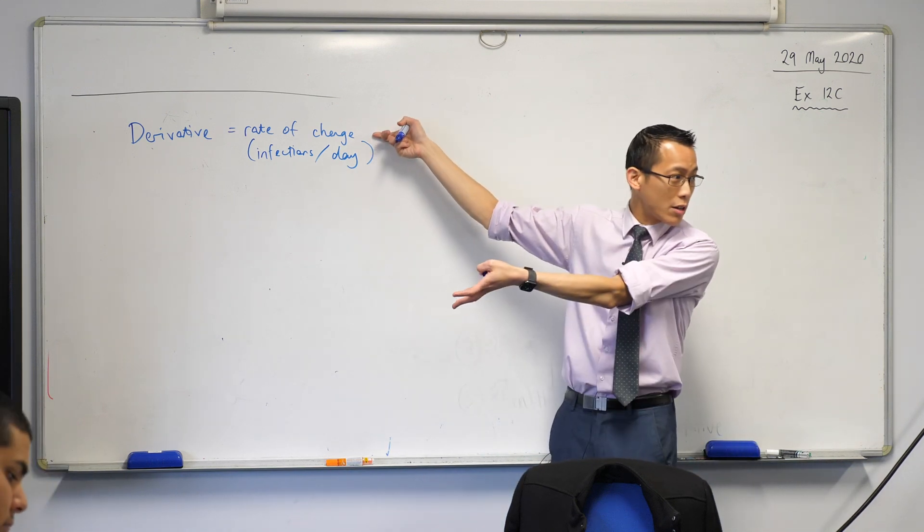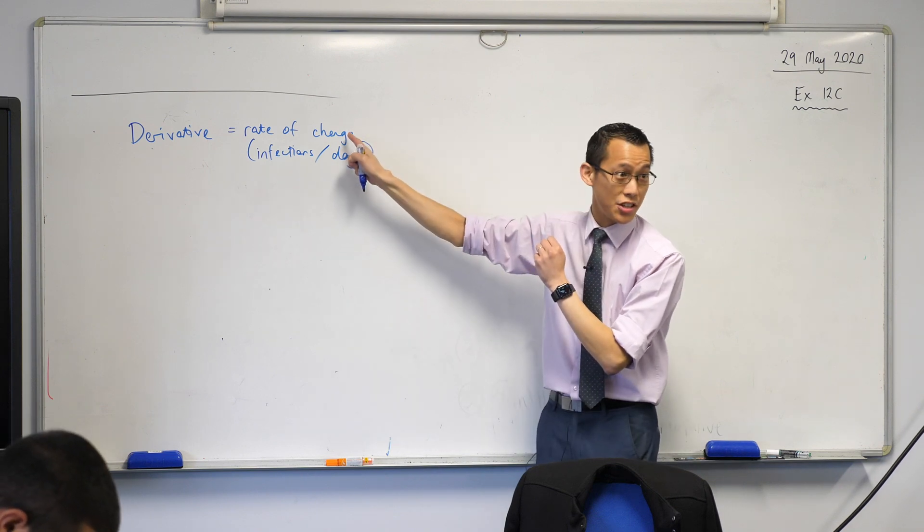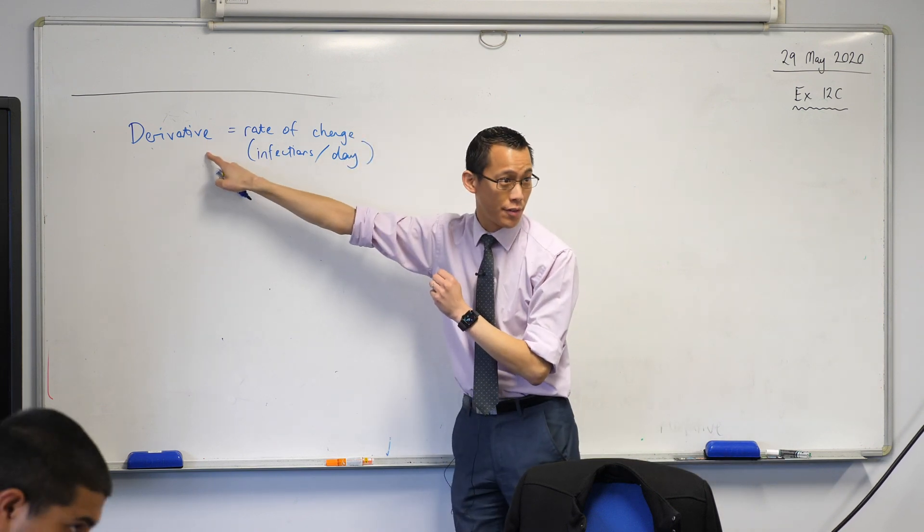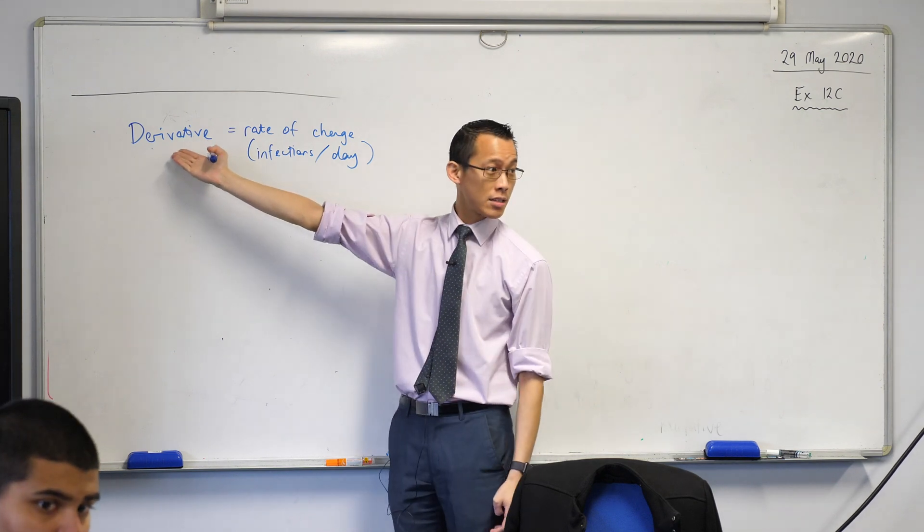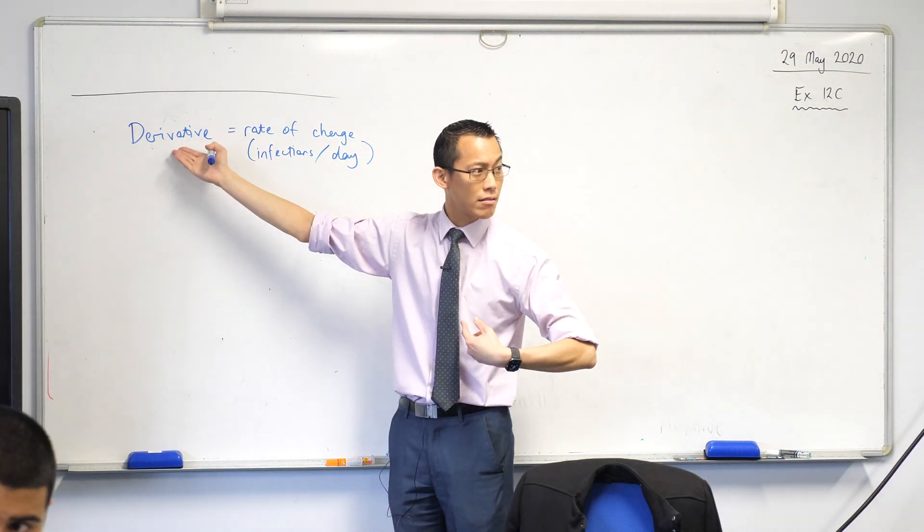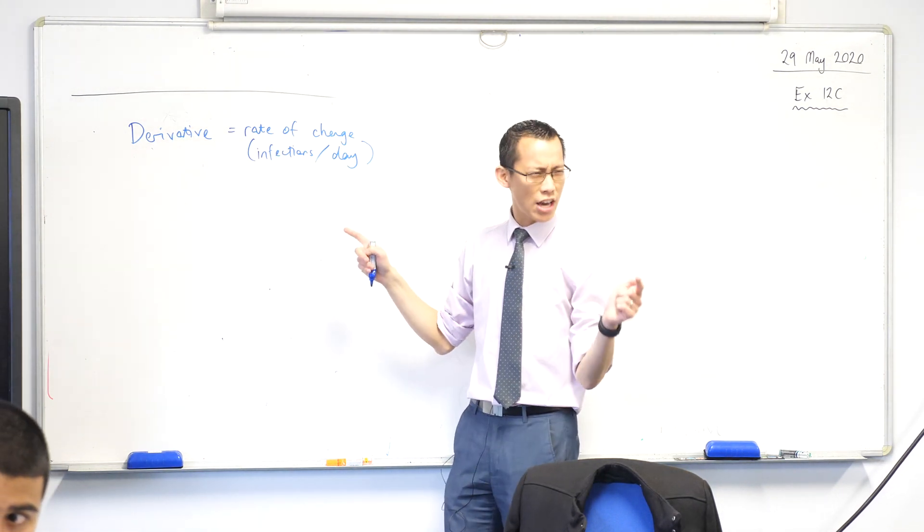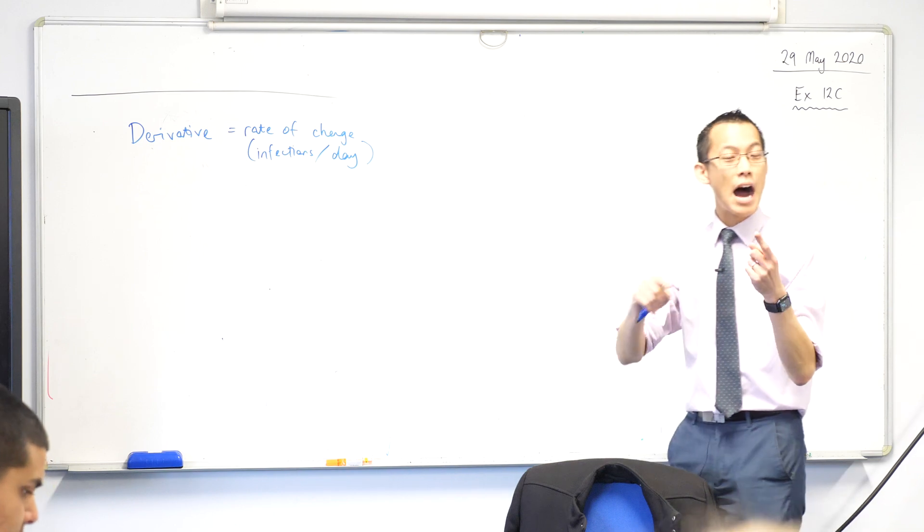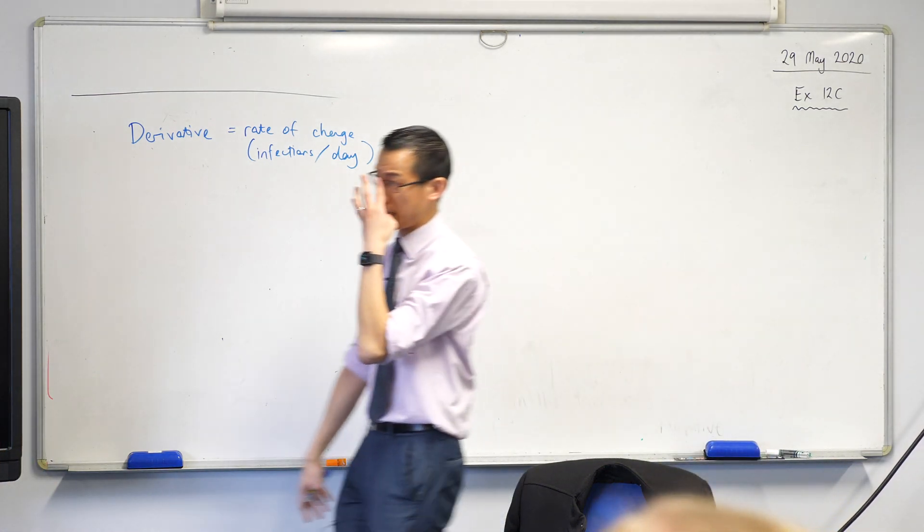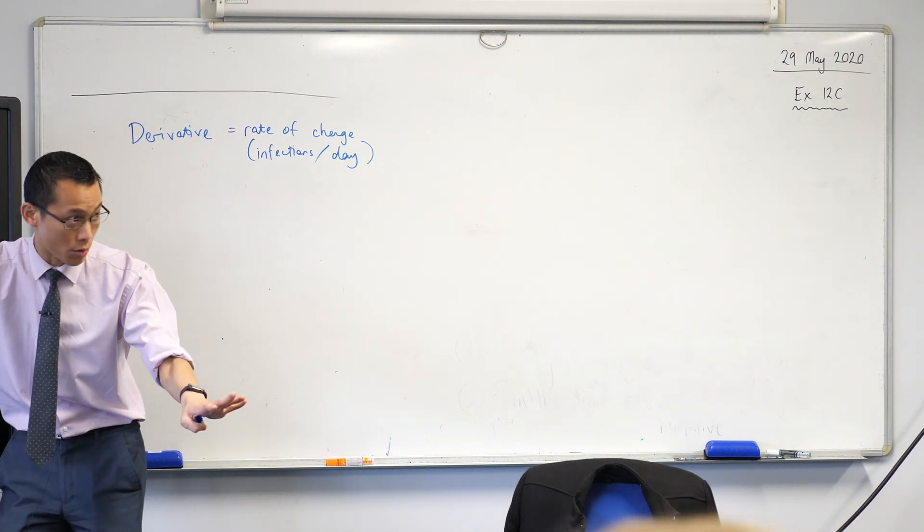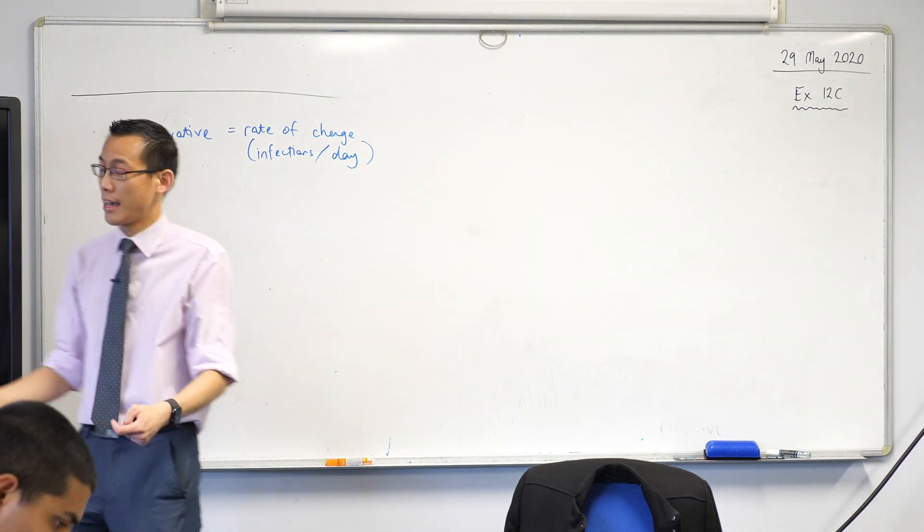We don't want to know about this. We know it's always increasing. It's always positive, right? What we want to know is how's that thing changing? How is the derivative changing? Is it getting faster and faster? Are we in trouble? Or is it getting slower and slower? Where actually it's working, okay?